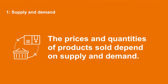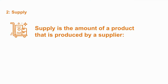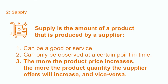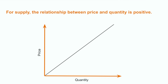First, supply and demand. The prices and quantities of products sold depend on supply and demand. Supply is the amount of a product that is produced by a supplier — it can be a good or a service, and it can only be observed at a certain point in time. The more the price of a product increases, the more quantity of this product the suppliers offer, and vice versa. This allows the producer to maximize its profits.